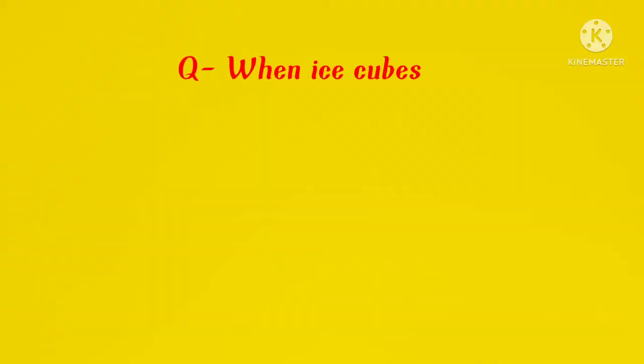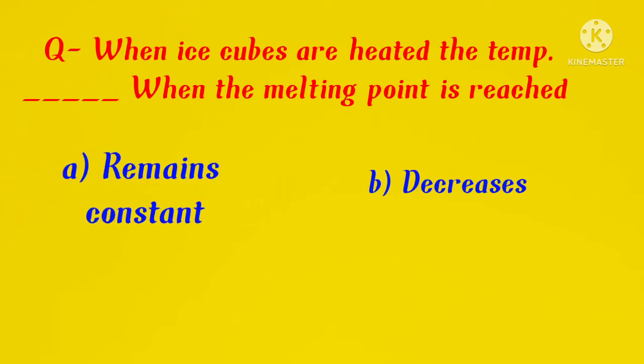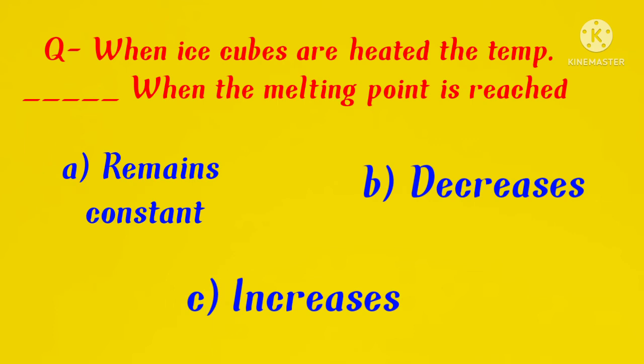Our first question is: when ice cubes are heated, the temperature blank when the melting point is reached. Here we have three options: the first one is remains constant, second one is decreases, and the third one is increases. We have already stated that whenever any object reaches its melting point, the temperature remains constant for a little while. So here our first option, that it remains constant, is correct.